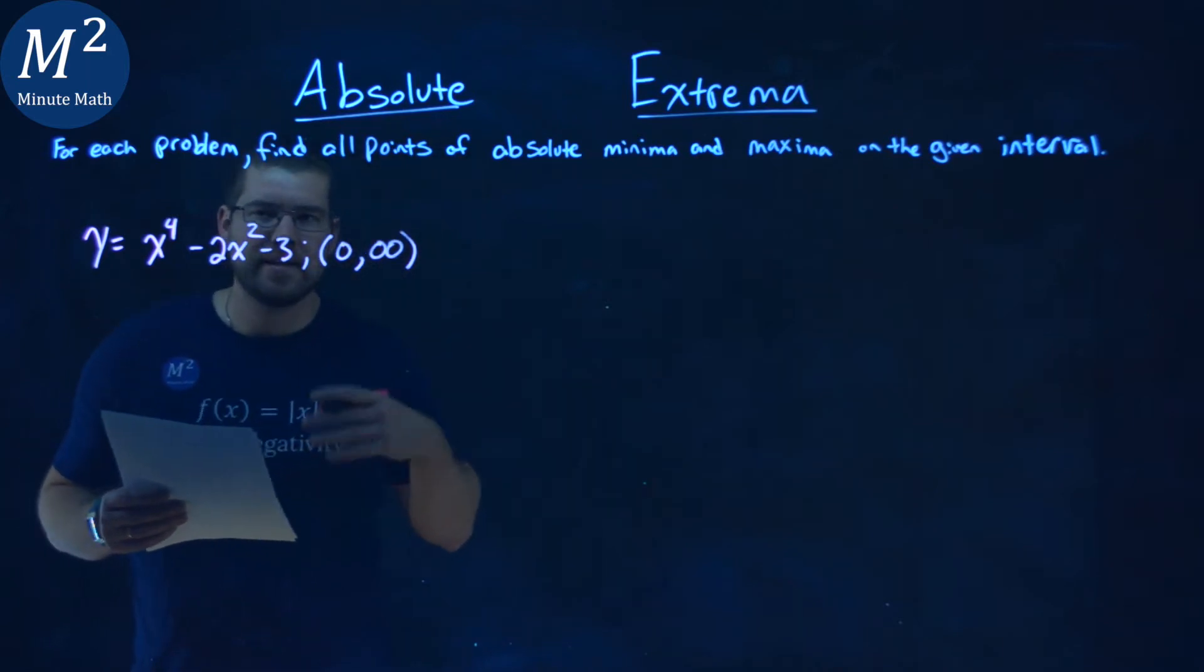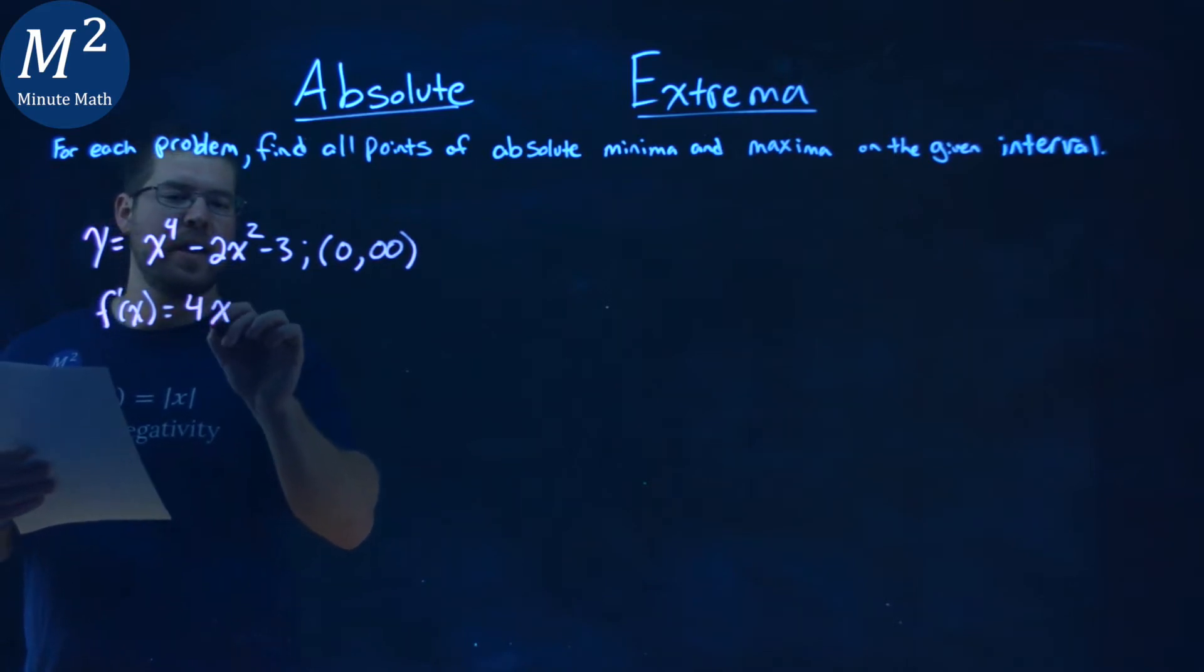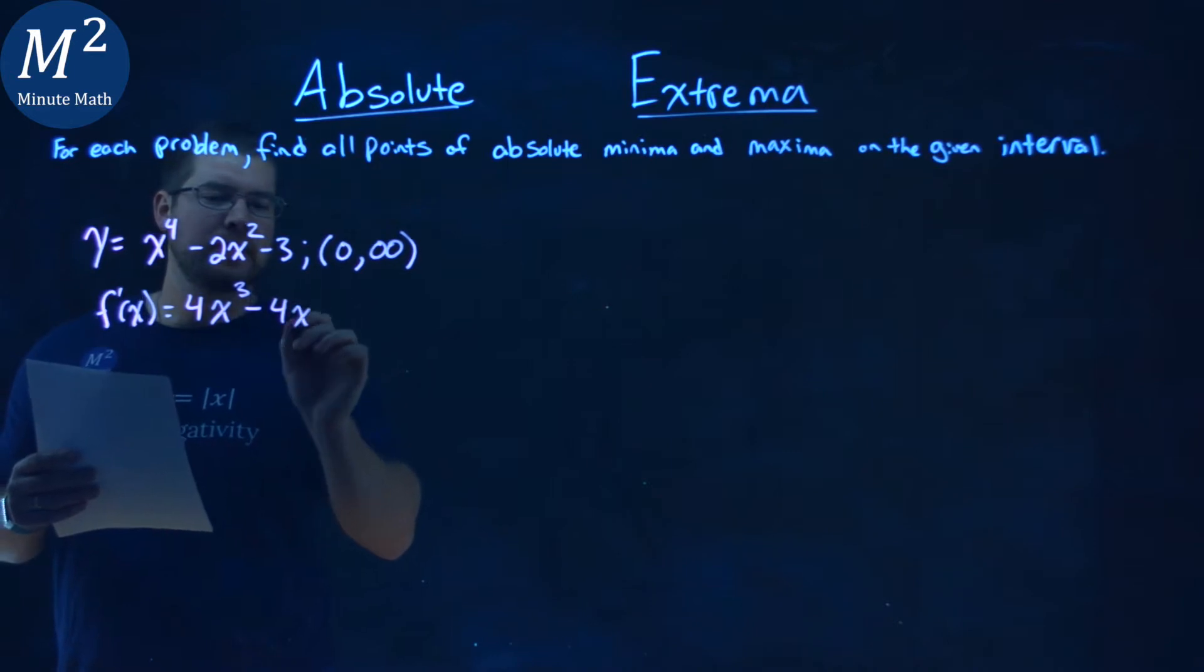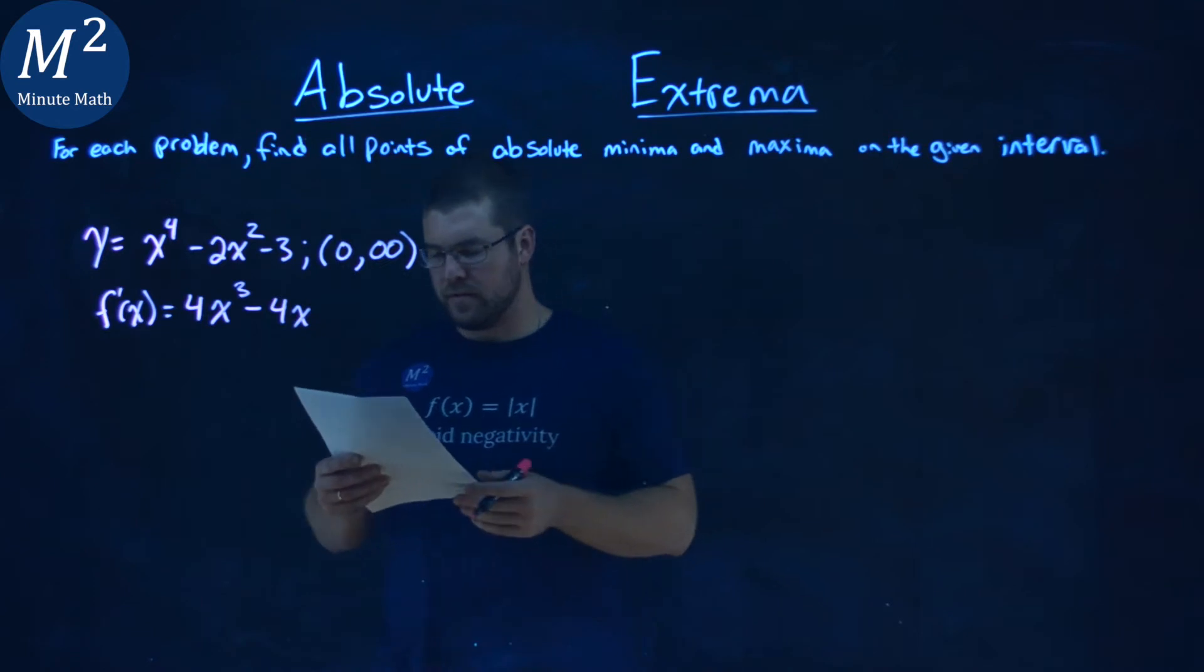First step, I want to find my derivative. So we find f prime of x here, and we'll use our power rule. 4 comes down, x to the third power now, minus 2 times 2 is 4, x to the first power, and the derivative of negative 3, since it's a constant, is just 0.